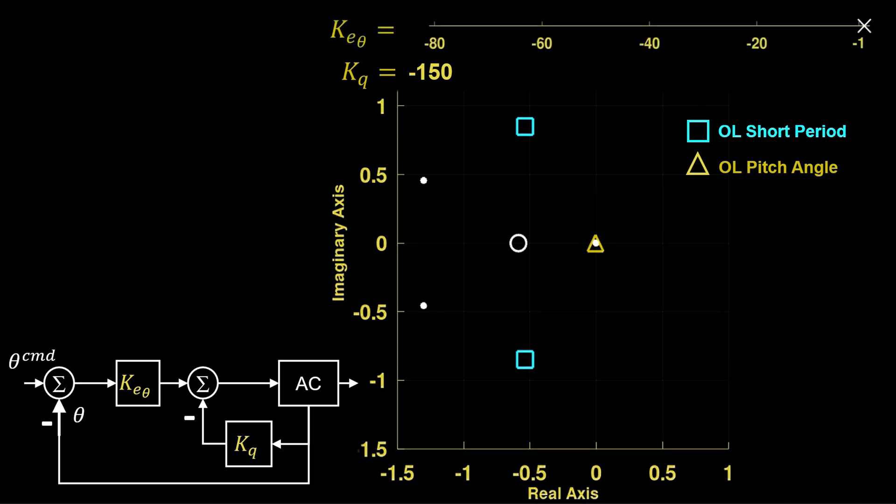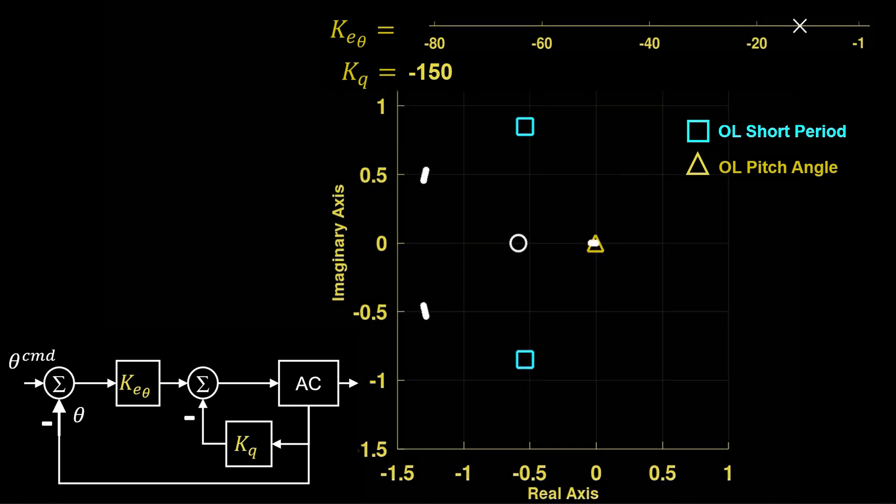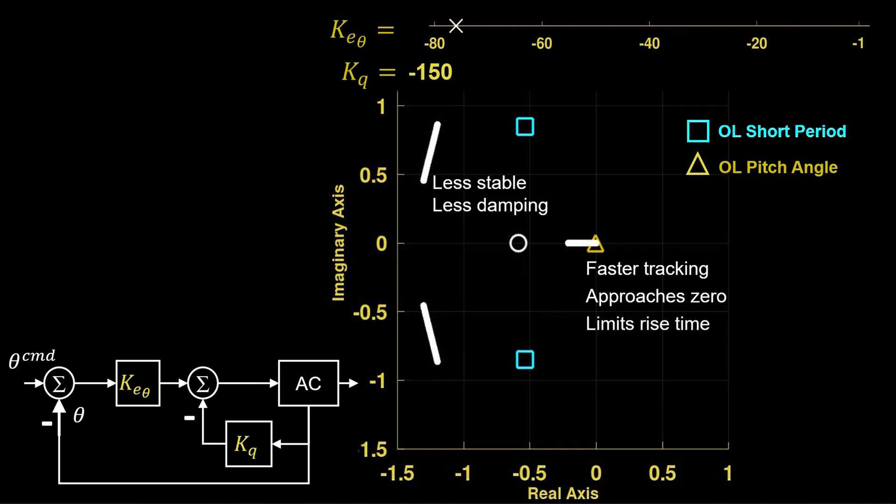Now, the effect of decreasing the pitch error gain, KE theta, is multifold. The short period becomes less damped and less stable, while the pitch pole shows faster tracking moving leftward on the real axis, approaching the open loop zero, which places a hard limit on the rate of pitch angle tracking.